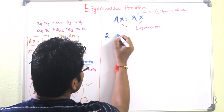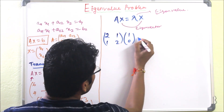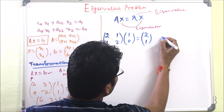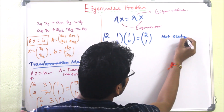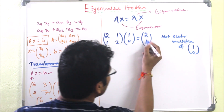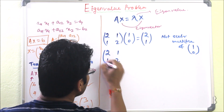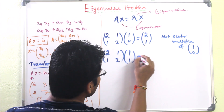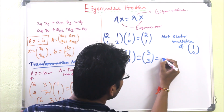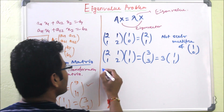To demonstrate: take the matrix [2, 1; 1, 2]. If we multiply it by [1, 0] we get [2, 1], which is not a scalar multiple of [1, 0]. But if we multiply [2, 1; 1, 2] by [1, 1], we get [3, 3], which is 3 × [1, 1]. So [1, 1] is an eigenvector with eigenvalue 3.